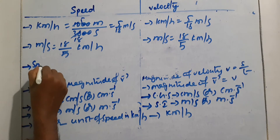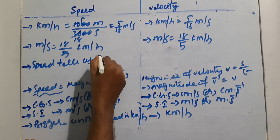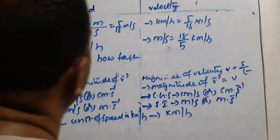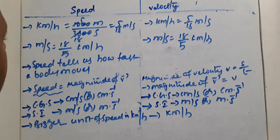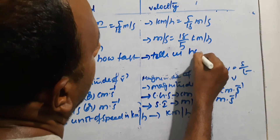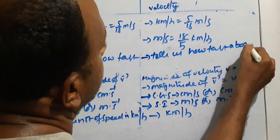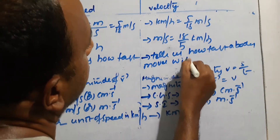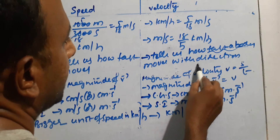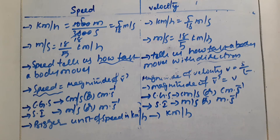Speed tells us how fast a body moves. Velocity tells us how fast a body moves along with its direction. Velocity is a vector, so it tells about the fastness of the body along with the direction — including how fast or how slow a body is moving and in which direction. These are the differences between speed and velocity.